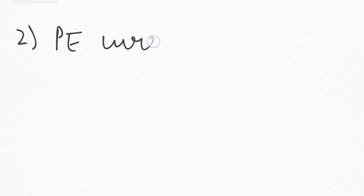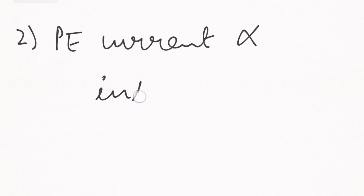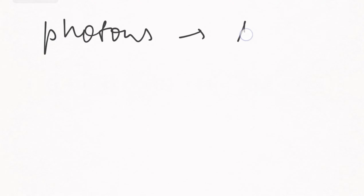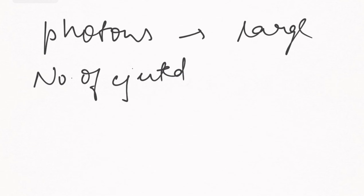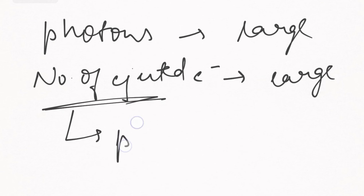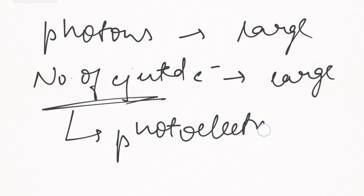The next experimental result is that the photoelectric current — the current due to electron ejection — is directly proportional to the intensity of light. If the intensity of light is higher, there are more photons. More photons mean more ejected electrons, and more ejected electrons mean a larger photoelectric current. This is straightforward.